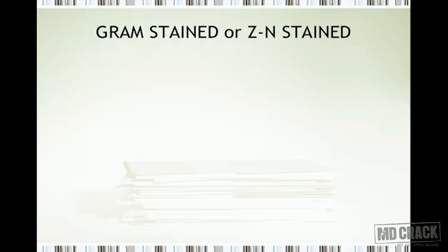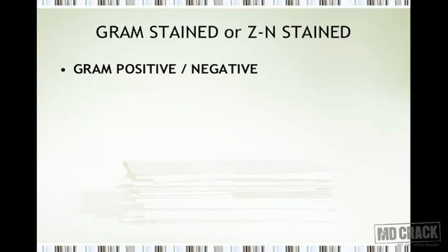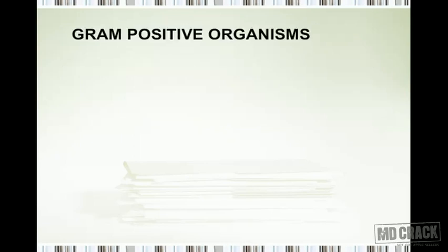Bacteria can be stained by Gram staining or acid staining — that is Ziehl-Neelsen staining. You can have gram-positive or gram-negative organisms, and you can have acid-fast bacilli, which are the mycobacteria — Mycobacterium tuberculosis and Mycobacterium leprae being the very common ones.